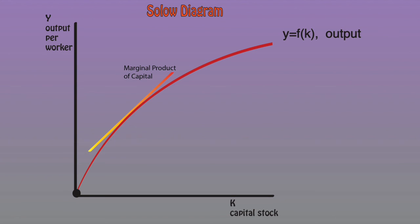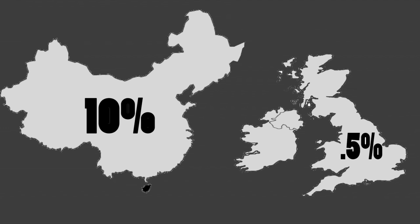And the richer countries will experience the diminishing returns of capital at a much higher degree. In the real world, this provides an explanation for why China's GDP has had an average growth rate of nearly 10% over the last 25 years, while the average GDP growth rate in the UK has only been around 0.5% for the same time frame.